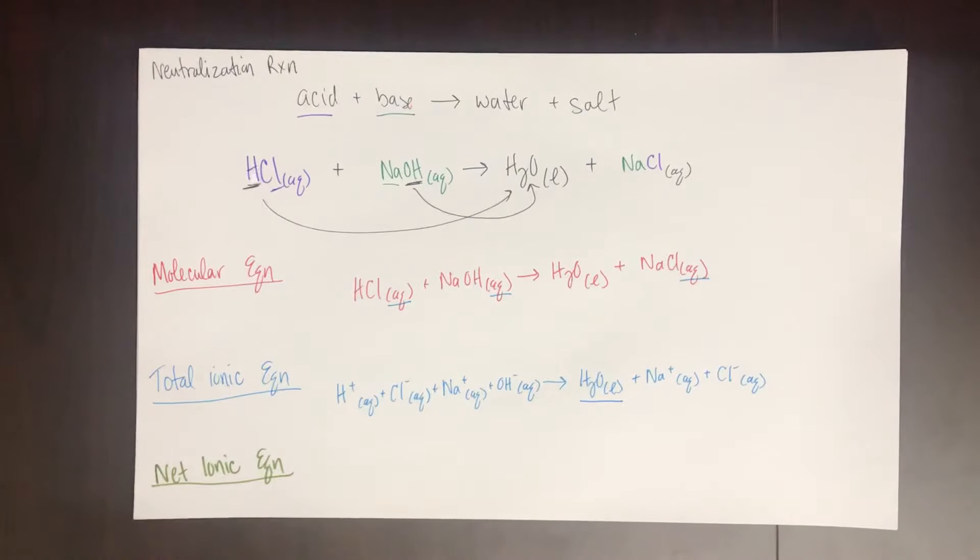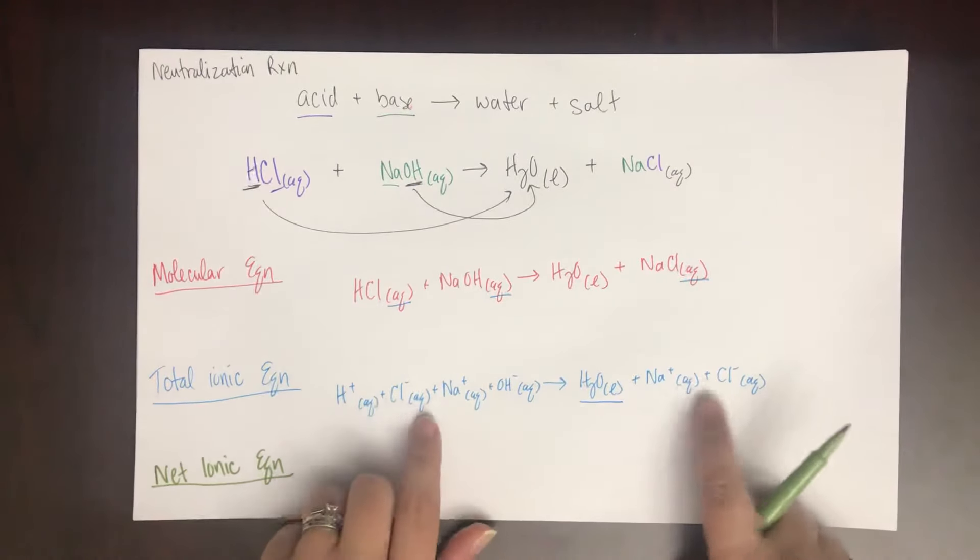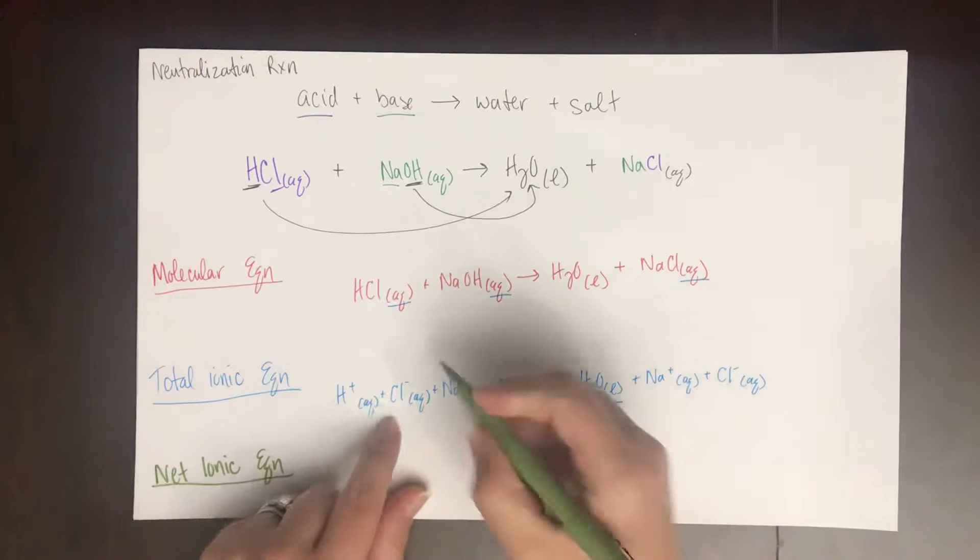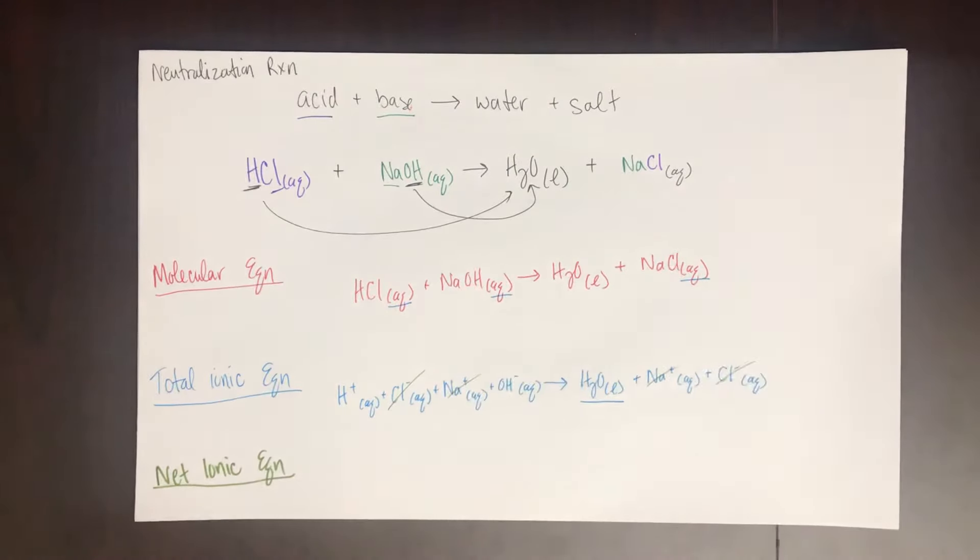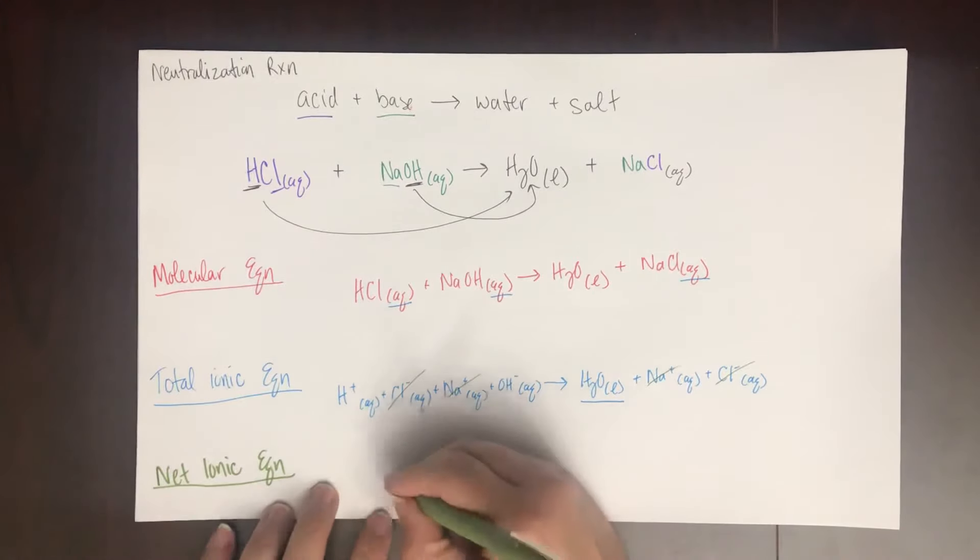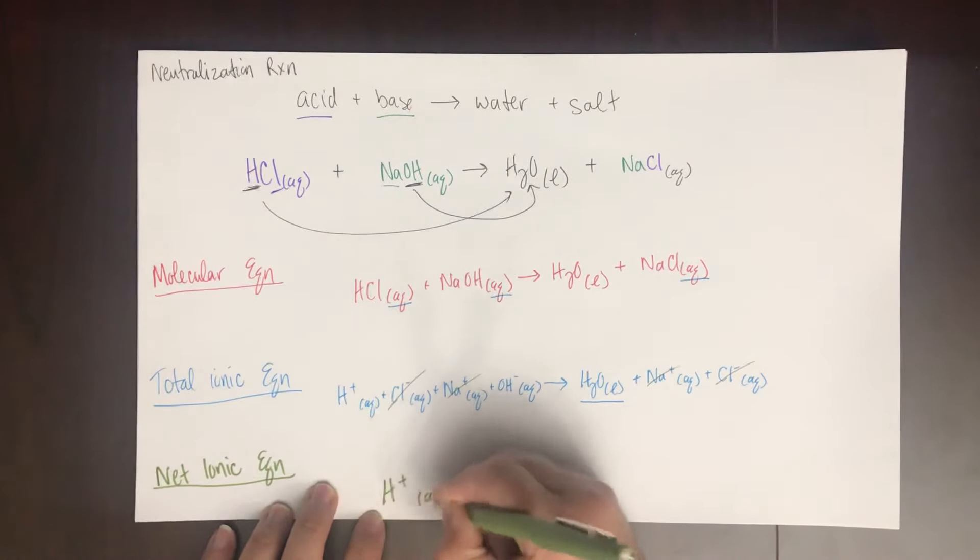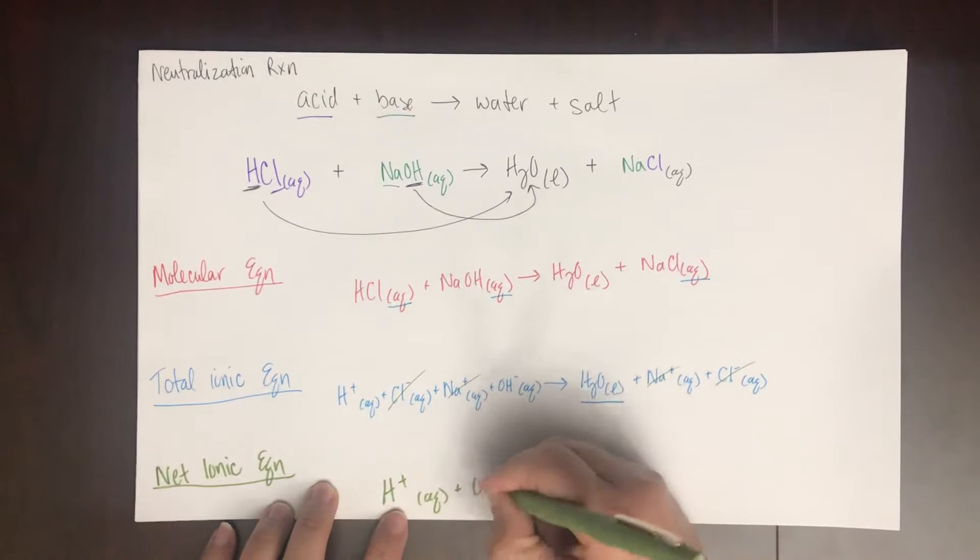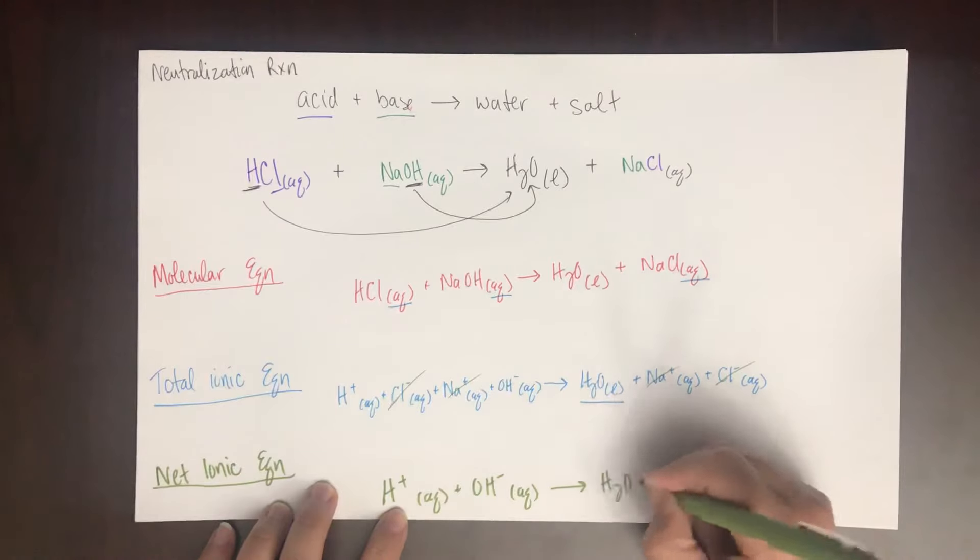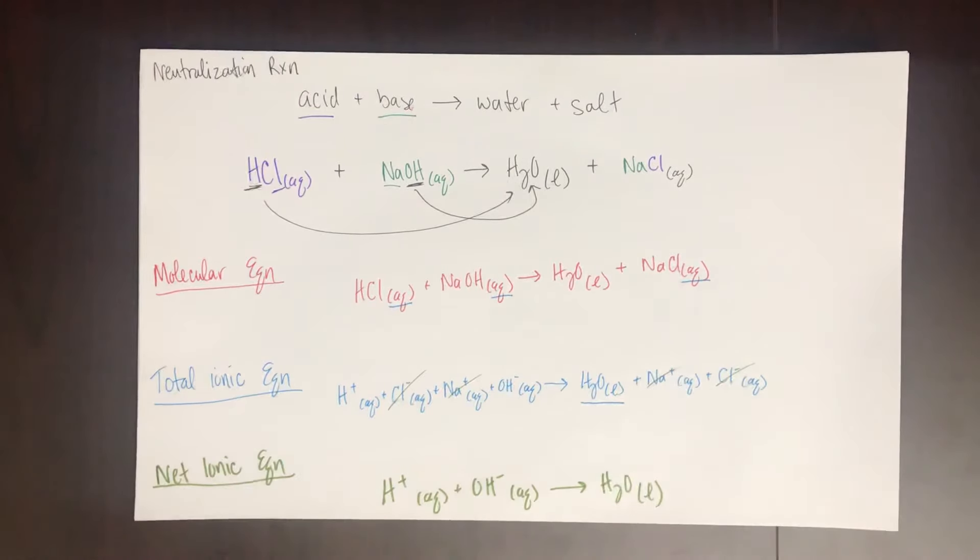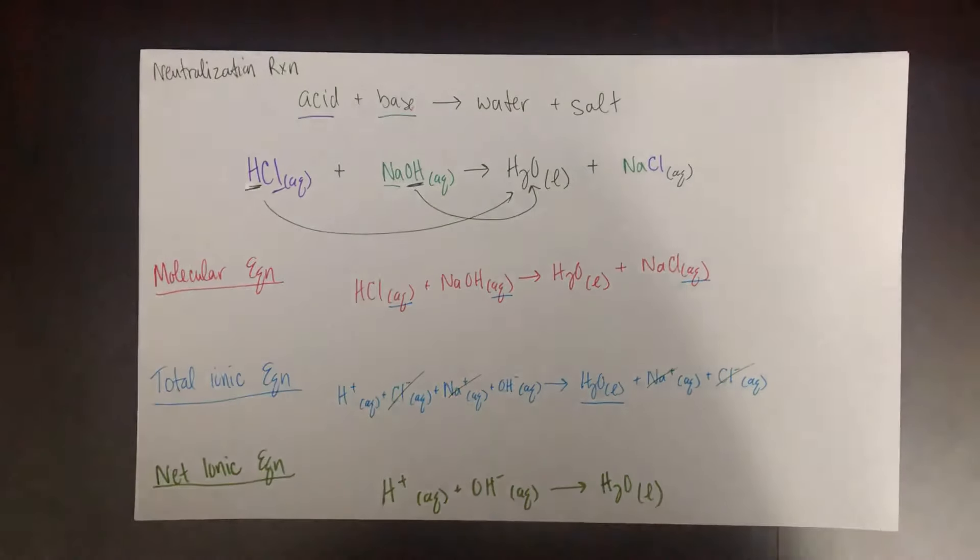Now for the net ionic equation, anything that's exactly the same on both sides of the arrow is going to get canceled. So like this chloride ion, that sodium ion. So now the net ionic equation is what I have left. And that's the net ionic equation. So this is an example of a neutralization reaction. Acid plus base gives you water plus salt.